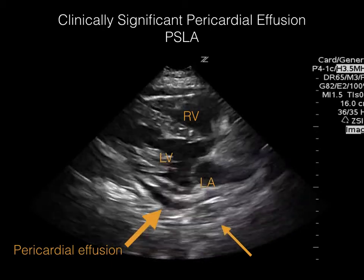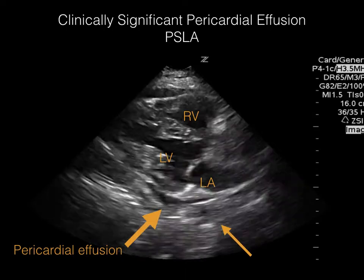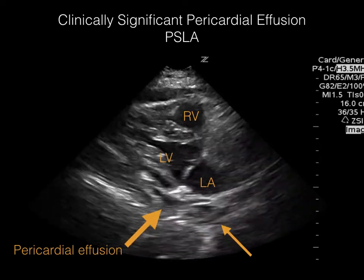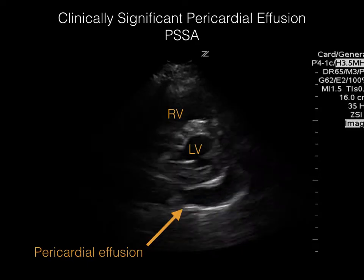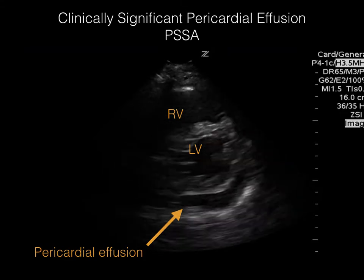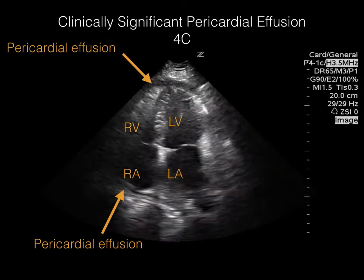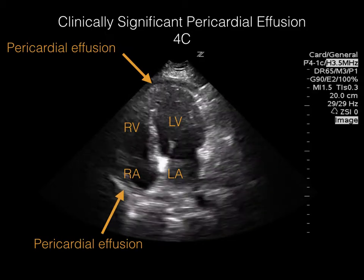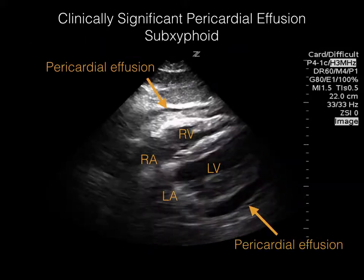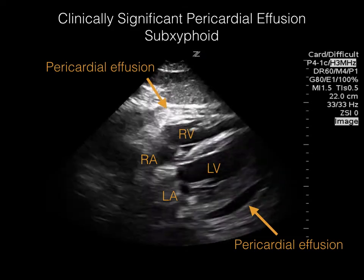This parasternal long axis view shows a pericardial effusion that appears as a black stripe, pointed by the large arrow, between the left ventricle and the descending aorta shown by the smaller arrow — a circular black structure posterior to the heart. In this parasternal short axis view, we see the same black stripe posterior to the left ventricular wall. In this four chambers view, we can identify a pericardial effusion at the apex and at the base of the right atrium. This subcostal view is a great view to look for a pericardial effusion — we can see it both anteriorly and posteriorly in this clip.